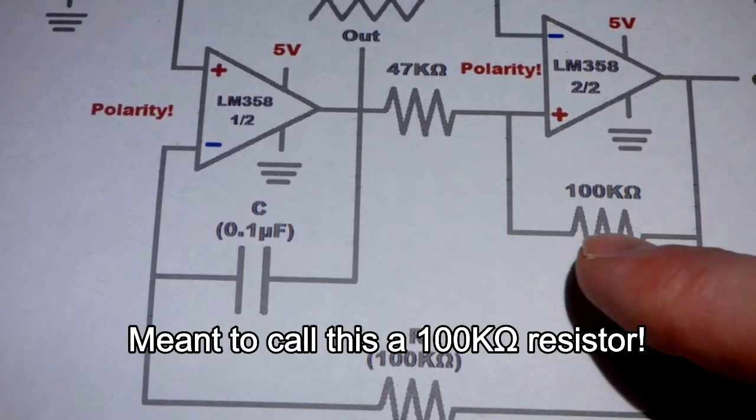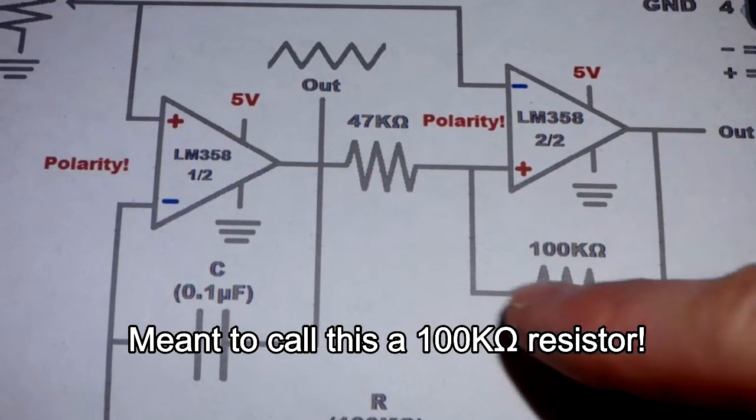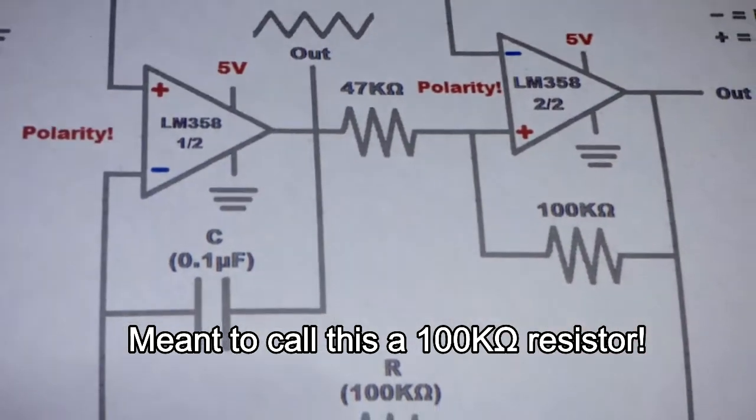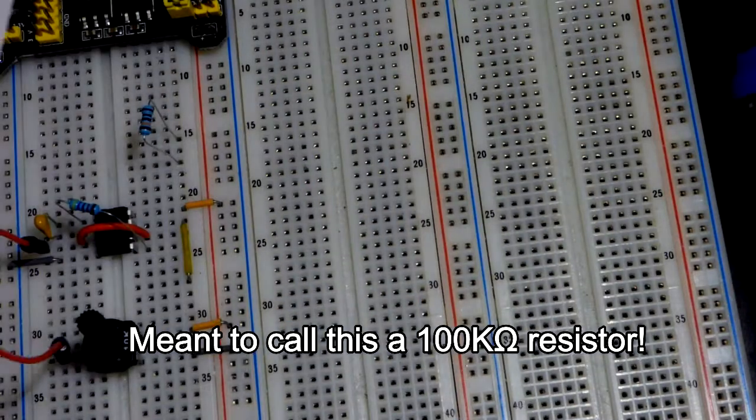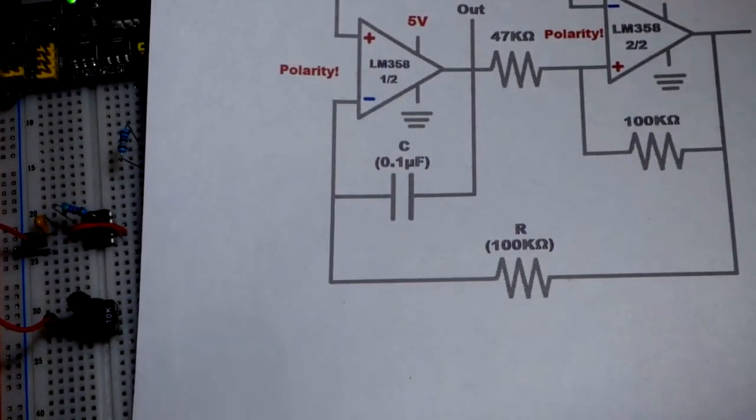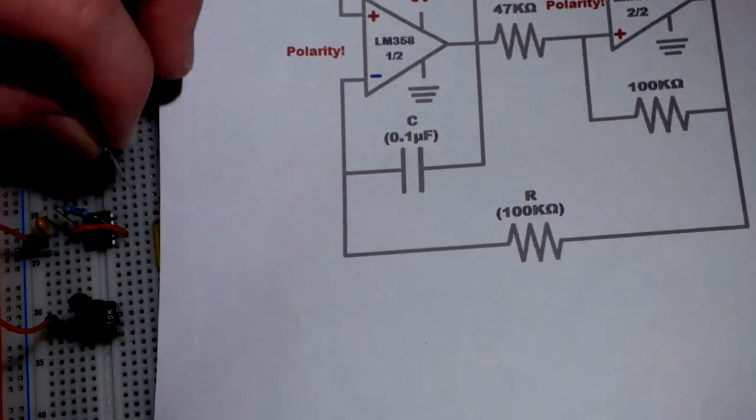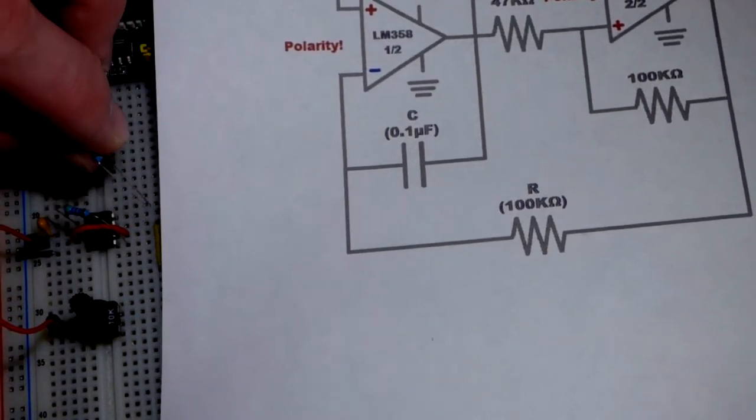Now we will put in this resistor here, 100 kilohm resistor, going from the output of the second op-amp to the non-inverting input right there. We can probably actually see this one not too bad while we're zooming back.